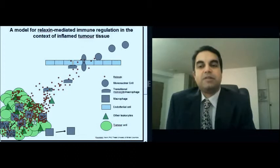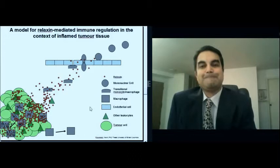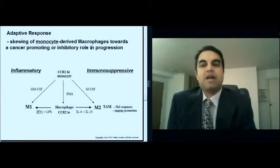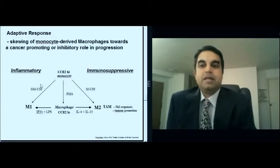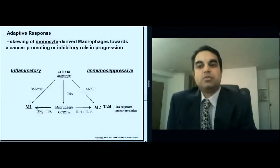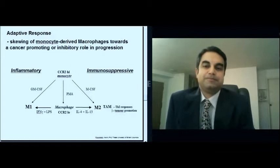And so in this context of high levels of cytokines and chemokines, these macrophages can be switched from an immunosurveilling phenotype to an immunosuppressive phenotype. And so that's really what this adaptive response is. It's a skewing of monocyte-derived macrophages towards a cancer-promoting or inhibitory role in progression. So in the inflammatory milieu of the tumor tissue, many different cytokines and chemokines are produced. And depending on this combination of cytokines and chemokines, the macrophages will either become an M1 inflammatory phenotype or an M2 immunosuppressive phenotype. And it's this M2 phenotype that's most often associated with tumor promotion. And these are also called tumor-associated macrophages.